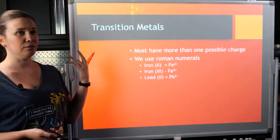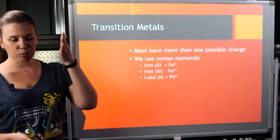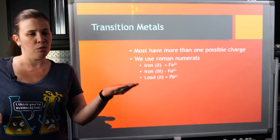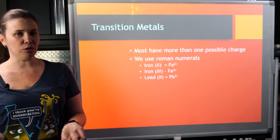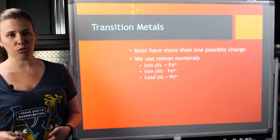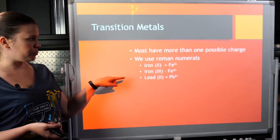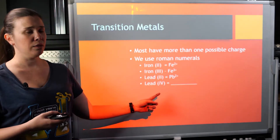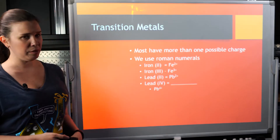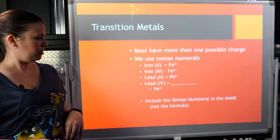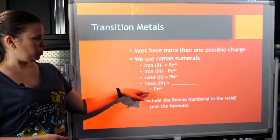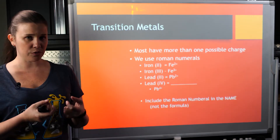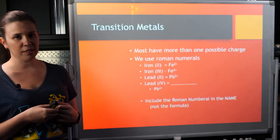Tin and lead are two exceptions I should mention. They're in column 14 of the periodic table, and with four valence electrons, they don't have a strong preference about whether they'll gain or lose electrons. Knowing they're metals, we know they should lose electrons, but they don't necessarily lose four all the time — they actually act like transition metals. So with tin and lead, we also give them Roman numerals. Lead II would be Pb2+, and lead IV would be Pb4+. You always include Roman numerals in the name of the compound, not in the formula. This is a common mistake — Roman numerals should never appear in the formula units, only in the naming.